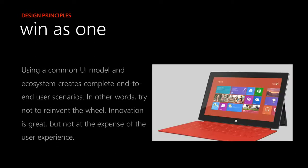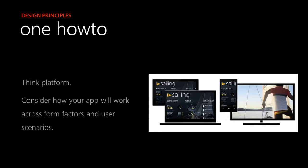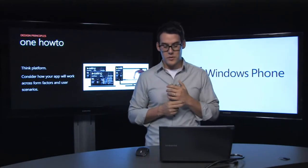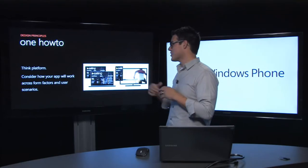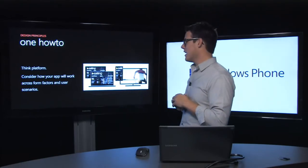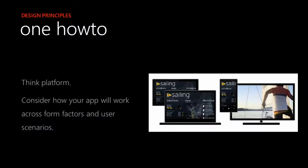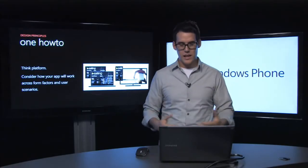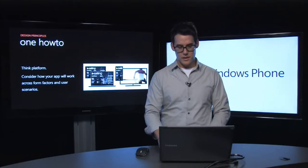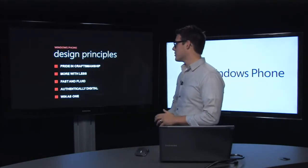Win as one. Using a common UI model and ecosystem creates complete end-to-end user scenarios — try not to reinvent the wheel. Innovation is great, but not at the expense of the user experience. Windows isn't just a phone. It has Xbox, Office, Bing, Outlook, SkyDrive, and pieces of Windows on the mobile phone, and all these platforms are available for development and creation. Think platform when creating a Windows Phone app — consider how your app will work not only in the palm of your hand, but on a tablet, laptop, or even your Xbox screen in the living room. That wraps up the design principles: pride in craftsmanship, more with less, fast and fluid UI, authentically digital, and win as one.